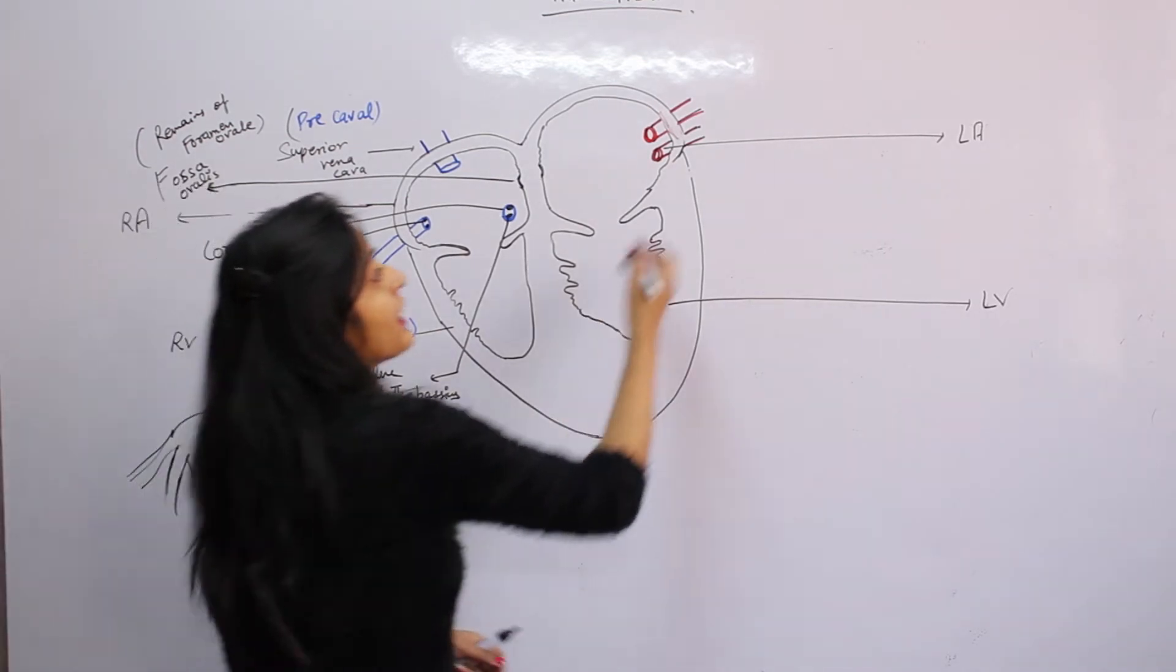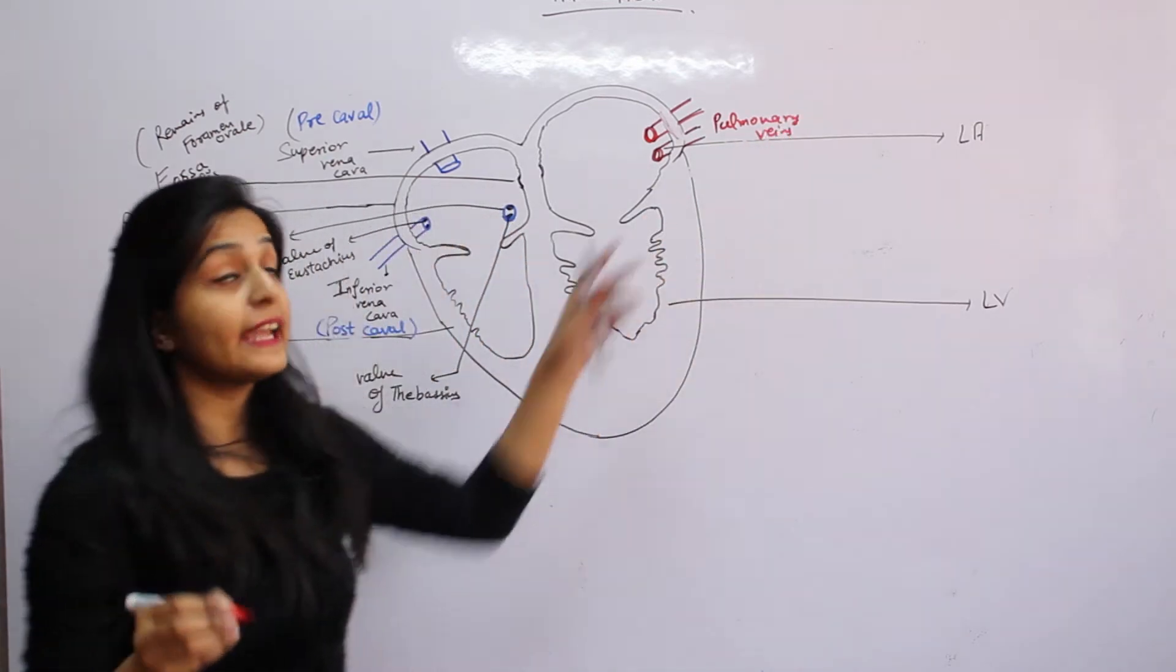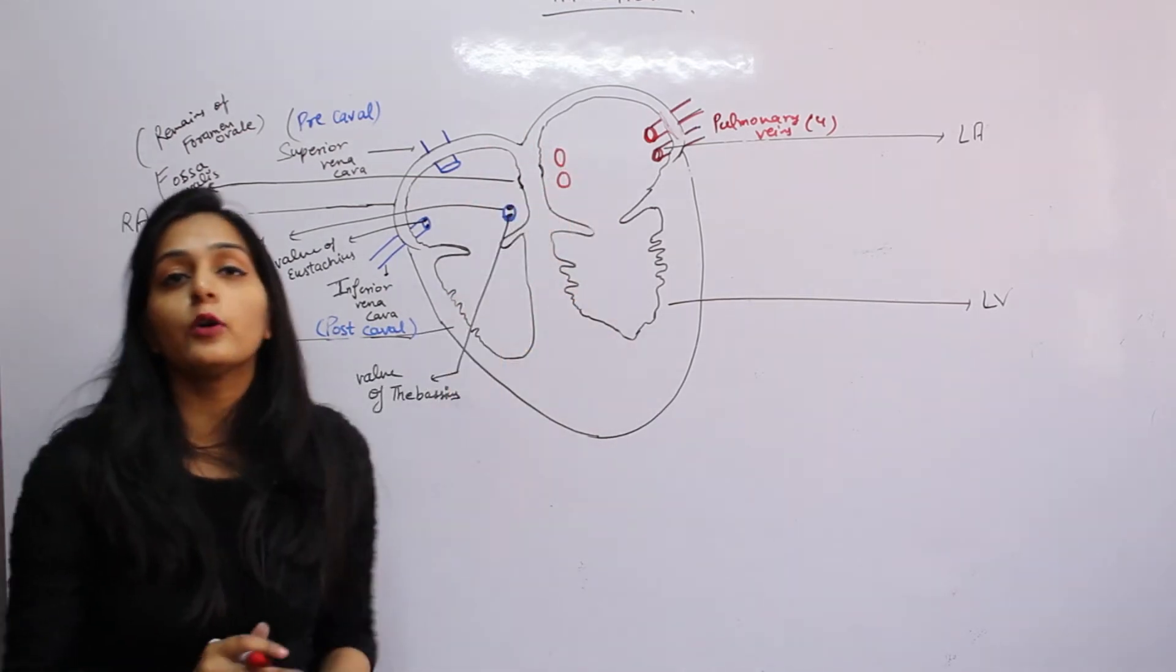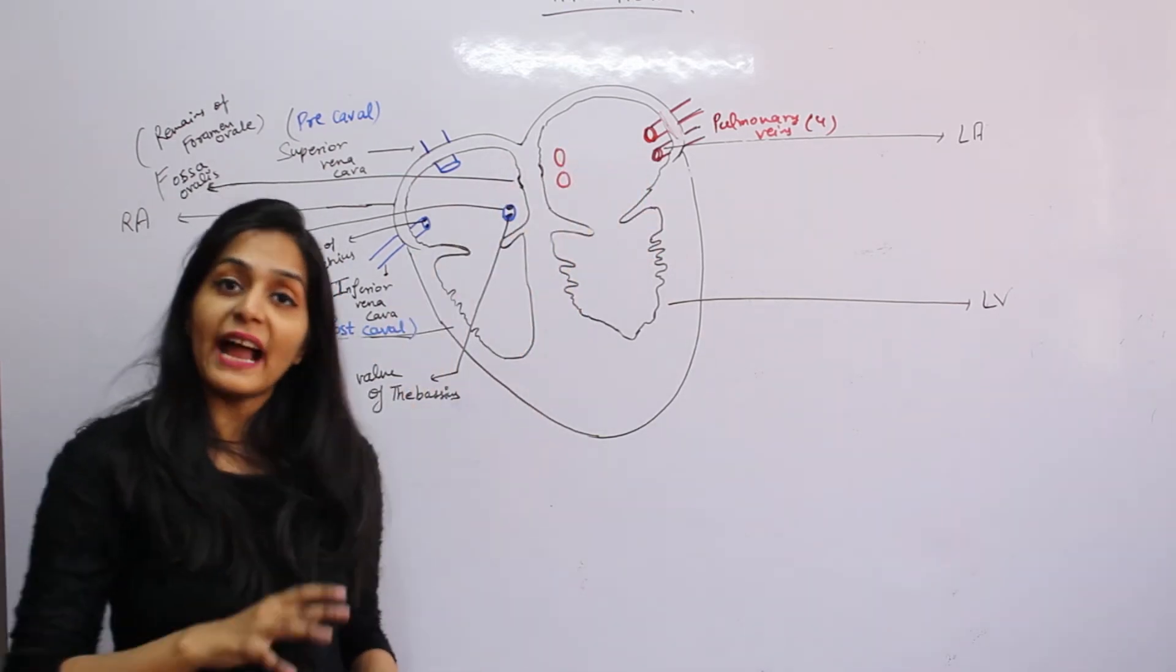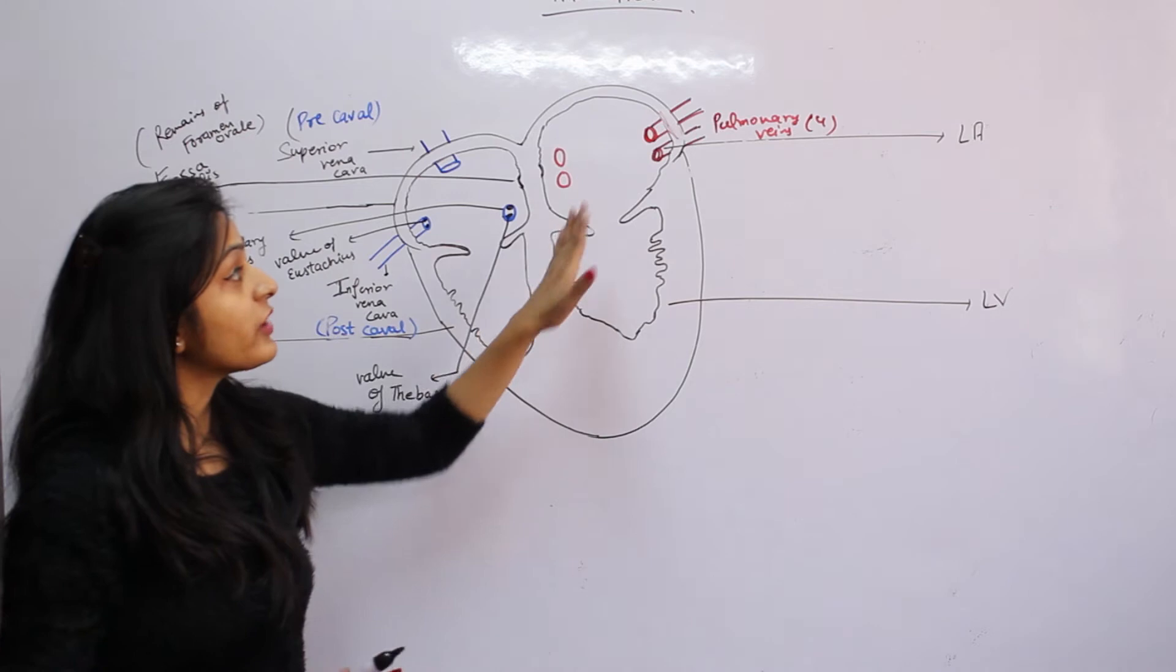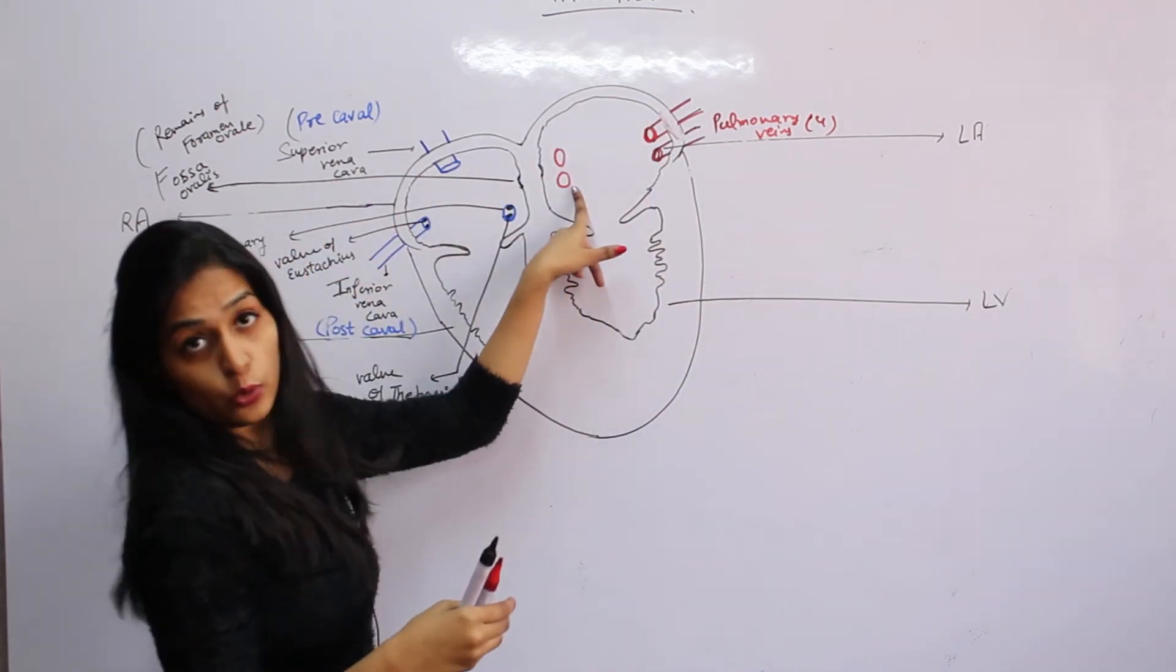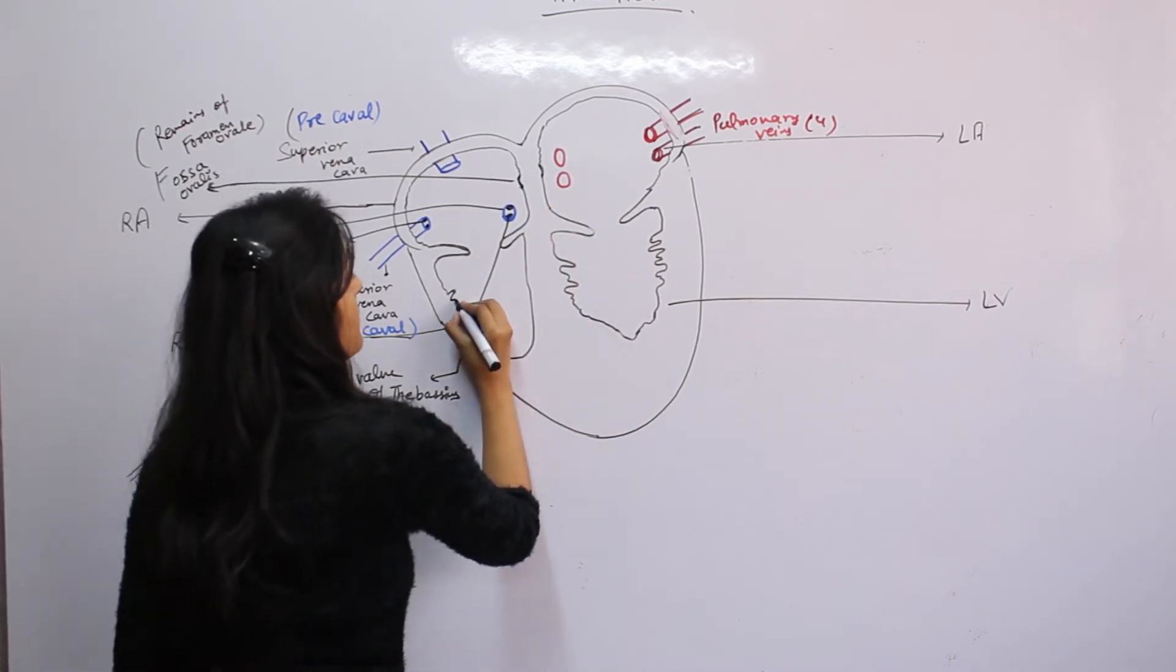Pulmonary veins carry oxygenated blood from the lungs. There are four pulmonary veins. They also do not have valves. Again, the same reason: they enter at an angle, and when contraction occurs, the opening will be closed to prevent backward flow. They don't need valves. Two come from the left side and two from the right.